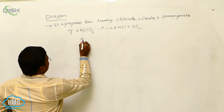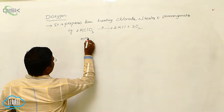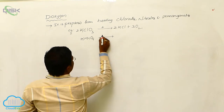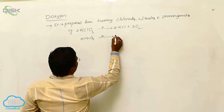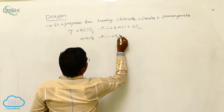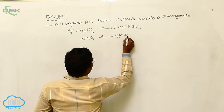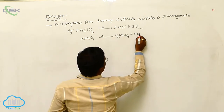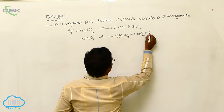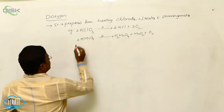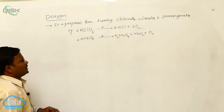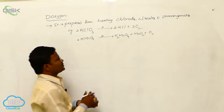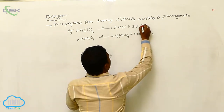Similarly, when potassium permanganate KMnO4 is heated, it produces K2MnO4 plus MnO2 plus O2. This is one method to produce Dioxygen in the laboratory.